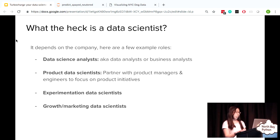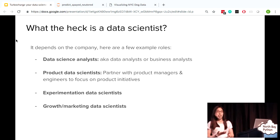And then there's product data scientists. They partner with product managers and engineers to focus on product initiatives. For example, building models to improve user experience on the product. And then there's experimentation data scientists who work on things like A-B testing and other experiments to measure the impact of changes. And then there's growth and marketing data scientists. They focus on things like optimizing Google AdWords spend, SEO analysis, LTV modeling, and other things like that.